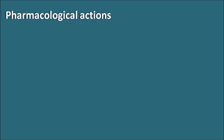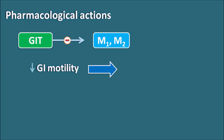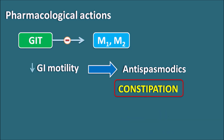What are the pharmacological actions? The important pharmacological action of Dicyclamine is on the GI smooth muscle. On the GI tract, different types of muscarinic receptors like M1 and M2 receptors are present. Dicyclamine can block these M1 and M2 receptors, resulting in relaxation and decreased GI motility, producing antispasmodic activity. That is why Dicyclamine can be used in the treatment of irritable bowel syndrome, but as motility is reduced, this drug can also produce constipation as a side effect.